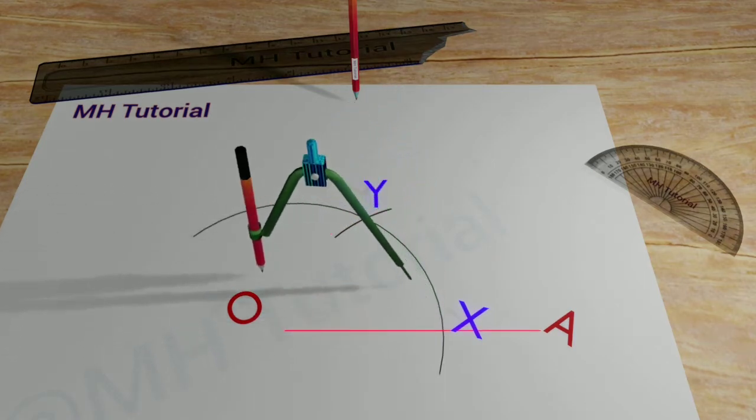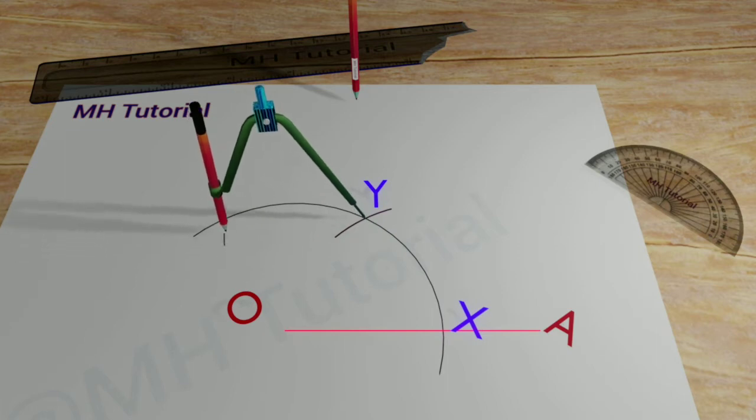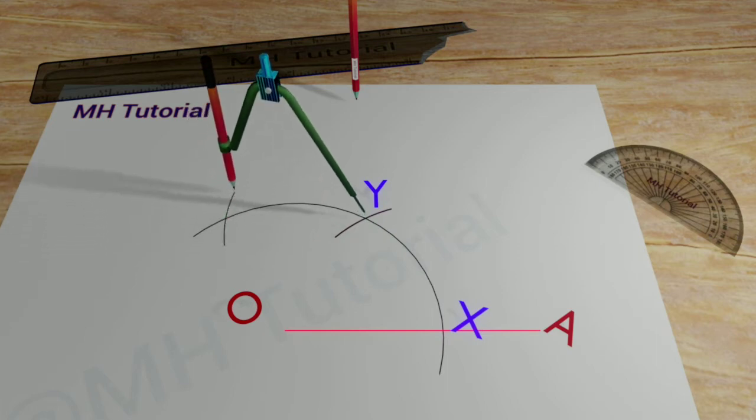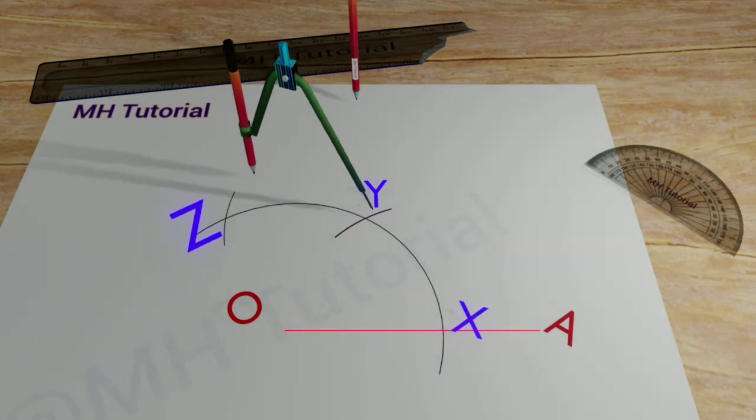After that put the tip of the compass at point Y and draw another circle arc of same radius, to get an intersection against the first circle arc. This point of intersection is named as Z.